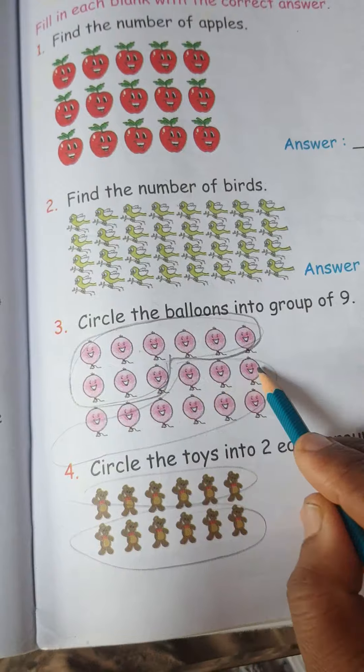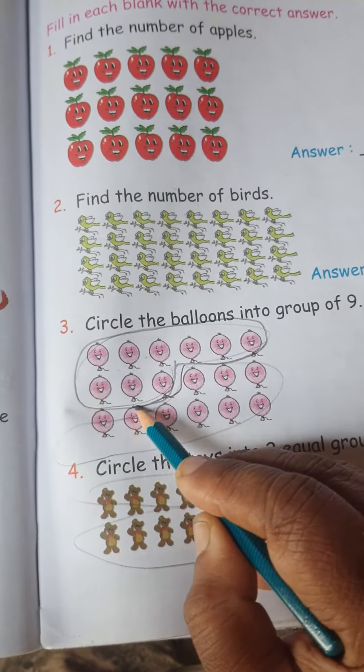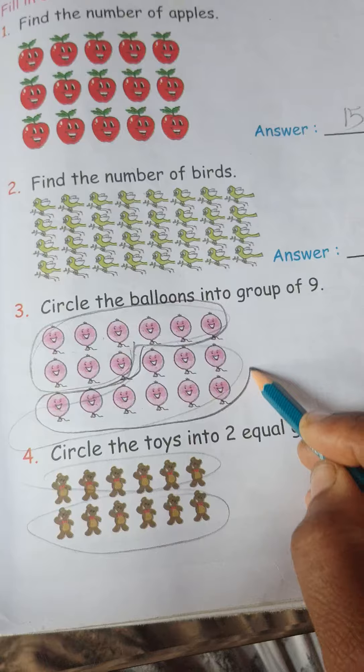Another 1, 2, 3, 4, 5, 6, 7, 8, 9. This is the second group of 9 balloons.